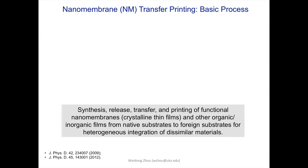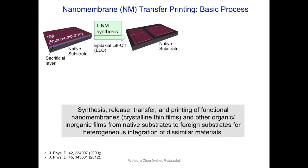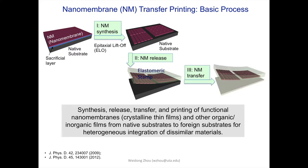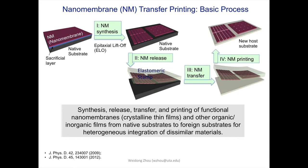The transfer is from a native substrate to a foreign substrate for heterogeneous integration of dissimilar materials. Starting with the example of SOI, we have a functional layer on top with a buried oxide (BOX) layer acting as a sacrificial layer. By immersing this structure in solution, we can suspend or release the top layer — what I call a nanomembrane synthesis process using epitaxial liftoff. The membrane is then picked up using a PDMS elastomeric polymer stamp, carried to the foreign substrate, and the crystalline film is printed on the new host substrate.